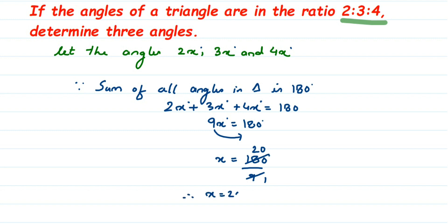If x value is equal to 20, we can find out the angles now. So 2x will be equal to 2 times 20, which will be equal to 40 degrees. This is the first angle. And the second angle we have is 3x, so it will be 3 times 20, which is 60 degrees. And the next we have is 4x, so it is 4 times 20, which is 80 degrees.